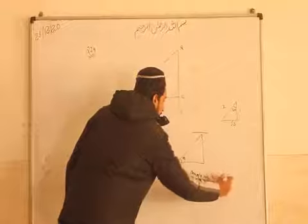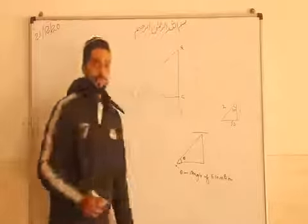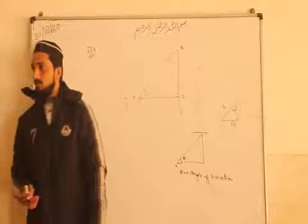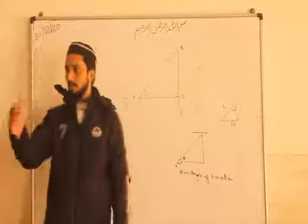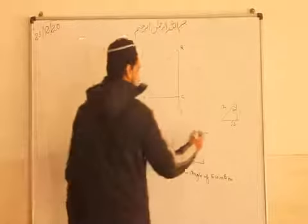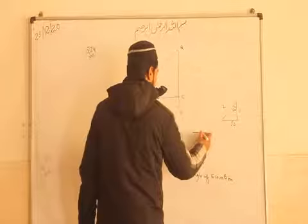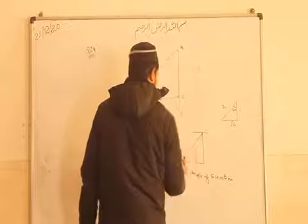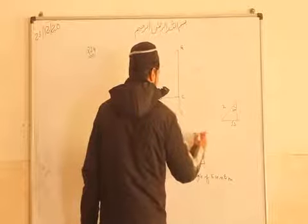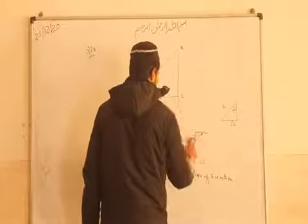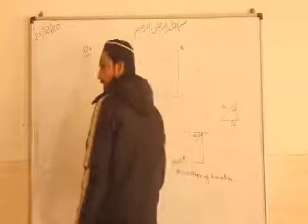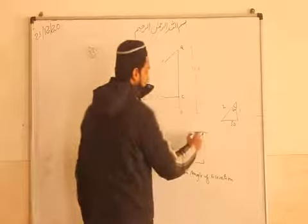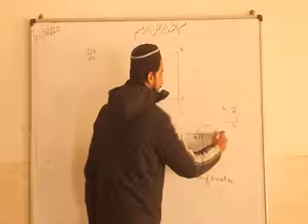And suppose if we are looking down at something, we are forming an angle with that. Suppose a person from the top is looking down to a point — that also forms an angle, equal to the elevation angle. And this angle is known as the angle of depression.